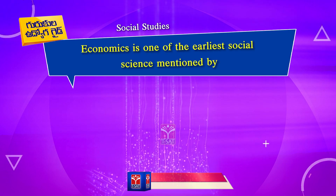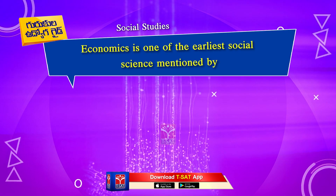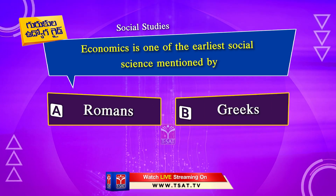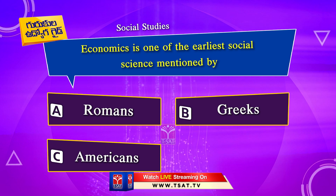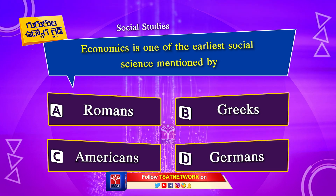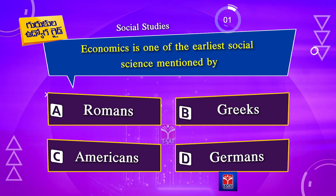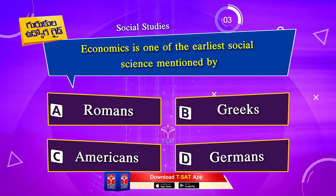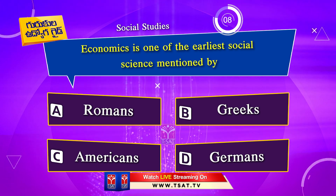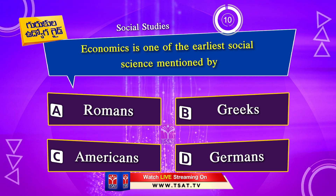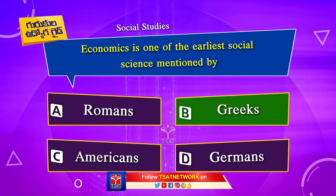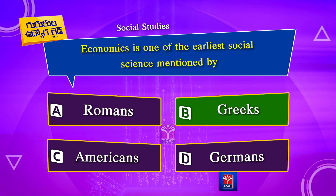Next question. Economics is one of the earliest social sciences, mentioned by: Option A. Romans. Option B. Greeks. The correct answer is Option B. Greeks.